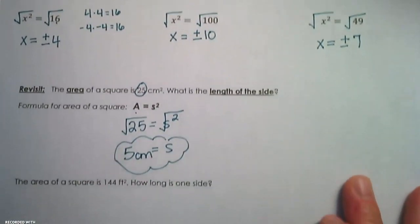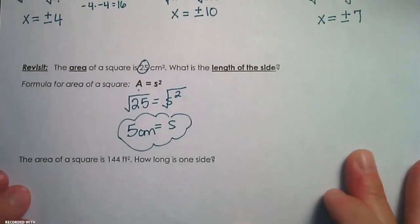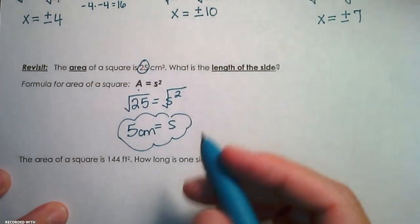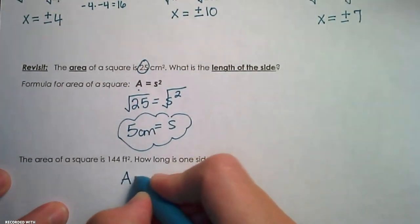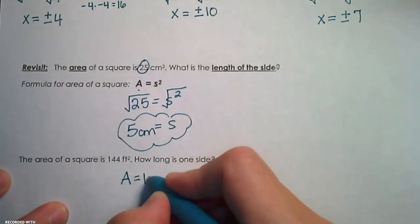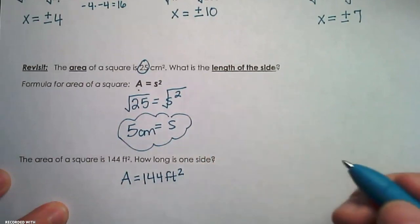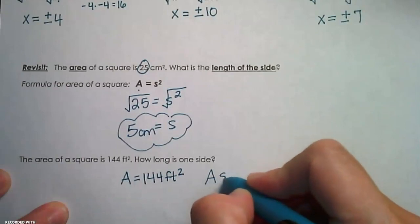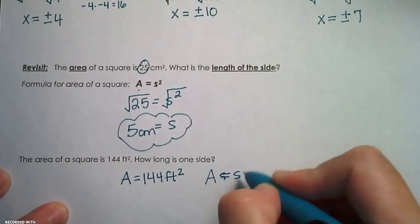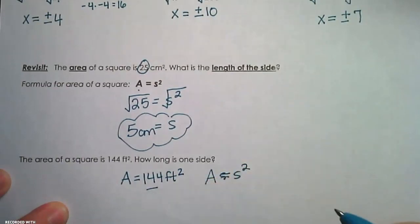Let's look at one more. The area of a square is 144 square feet. How long is one side? So we know area is 144 feet squared. Our formula for area of the square is area equals side squared. We're going to plug in 144 for area.